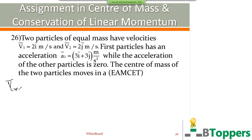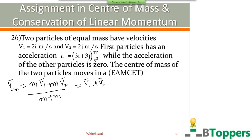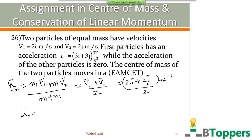Velocity of center of mass is given by Vcm = M1*V1 plus M2*V2 divided by M1 plus M2. Here both particles have equal mass M, so M1 = M2 = M. You get Vcm = (V1 + V2) / 2. V1 is 2î and V2 is 2ĵ m/s. So the initial velocity of the center of mass is (2î + 2ĵ) / 2 = (î + ĵ) m/s.